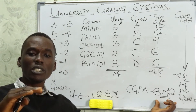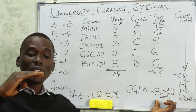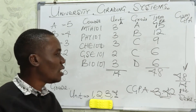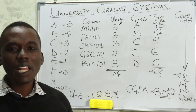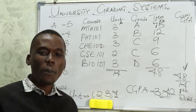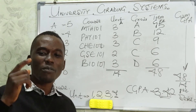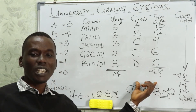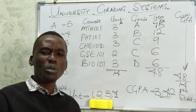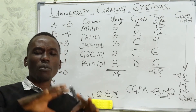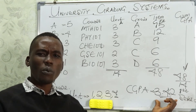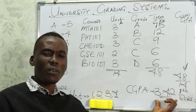You see why it is very important that during your first semester in school, you should target all A or at the very least a B in any of your three-unit courses. That is going to boost your CGPA. And once your CGPA has gotten to a higher point — the point of a first classer — then you can continue maintaining it all through your years in school.